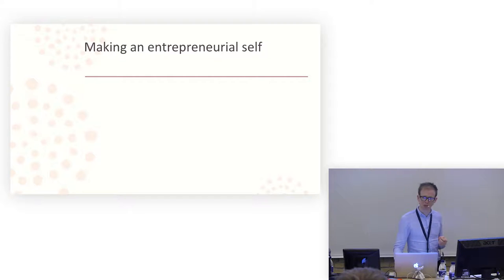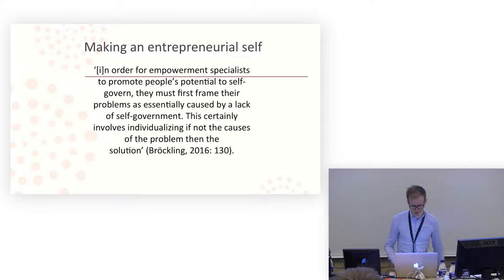But in order to build an entrepreneurial self, we need to construct a certain kind of subject. And there's a fantastic book by Ulrich Bröckling called The Entrepreneurial Self. And he says about how entrepreneurialism is intimately connected with the notions of empowerment. And we can see these devices and programs as means of empowering workers within a certain kind of way. And he suggests in order for empowerment specialists to promote people's potential to self-govern, they must first frame their problems as essentially caused by a lack of self-government. So this certainly involves individualizing, if not the causes of the problem, then the solution. So they need to encourage people to think that the way to being better, healthier, just to generate a better person is individual and is down to a lack of self-government.